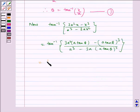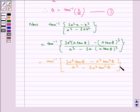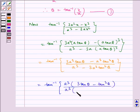Which is equal to tan inverse of 3a cube tan theta minus a cube tan cube theta by a cube minus 3a cube tan square theta. This gets cancelled.